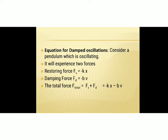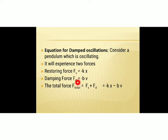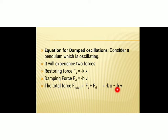Now, what is the equation for damped oscillations? To find the equation, consider a pendulum which is oscillating. It experiences two forces: one is the restoring force −kx, and another is the damping force −bv. So the total force experienced by the pendulum will be −kx + (−bv) = −kx − bv. This is the total force in a damped oscillation.